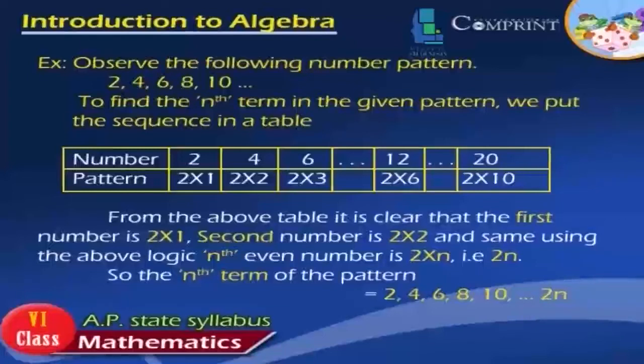From the above table, it is clear that the first number is 2×1, the second number is 2×2, and using the same logic, the nth even number is 2×n, which is 2n. So the nth term of the pattern 2, 4, 6, 8, 10, and so on, is 2n.